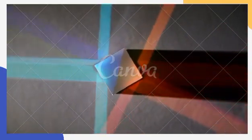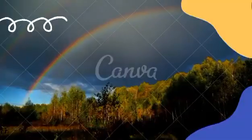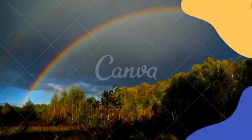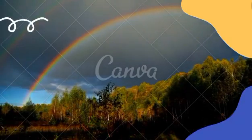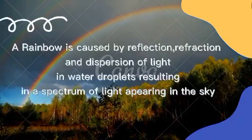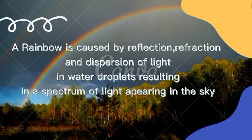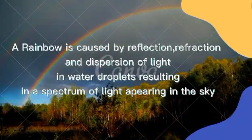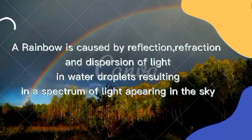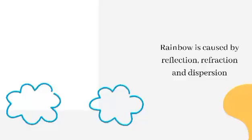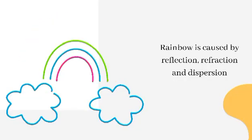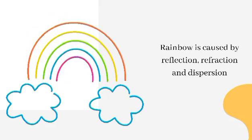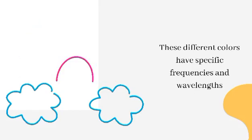Does that color combination sound familiar to you? Look at this example — can you see a rainbow? Exactly. A rainbow is caused by reflection, refraction, and dispersion of light in water droplets, resulting in a spectrum of light appearing in the sky. It consists of different colors: red, orange, yellow, green, blue, indigo, and violet.